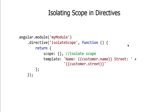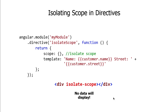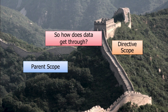There's a problem with this isolate scope setup though: when we use the directive, no data will display. We're trying to access a customer property with name and street sub-properties, but that customer property is gone — we shut it off when we built the wall with the scope object. So how does data get through? How do we get data from the parent scope over to the directive's isolate scope?